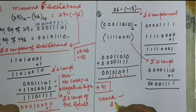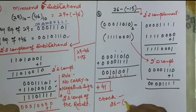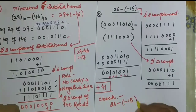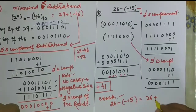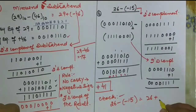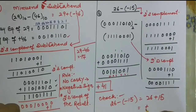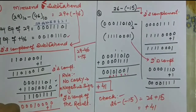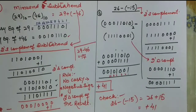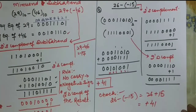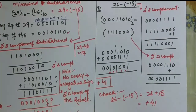We check: this is 26 minus negative 15, which equals 26 plus 15 equals 41. The result also matches. This is the way how we can perform subtraction using the two's complement method.